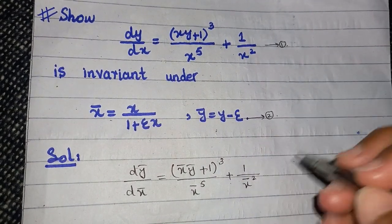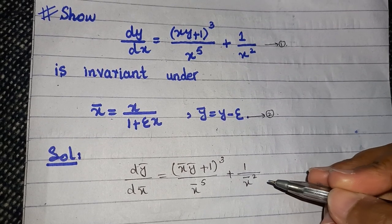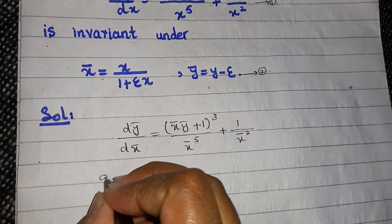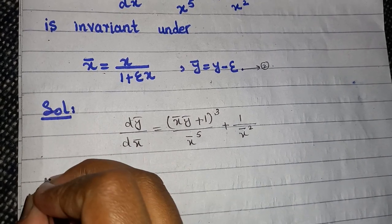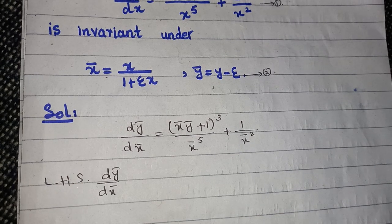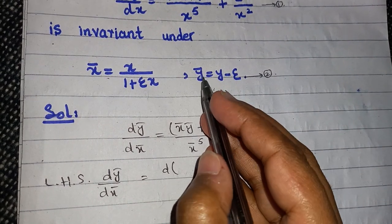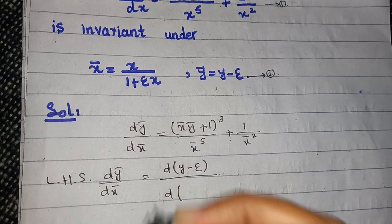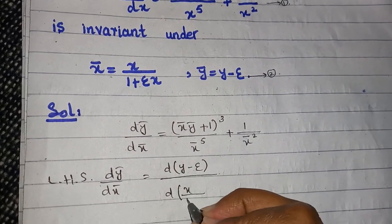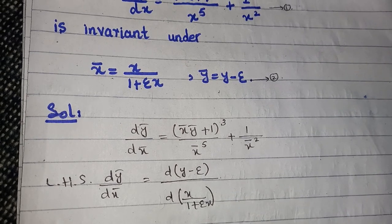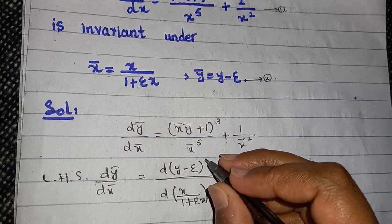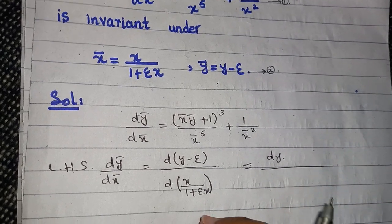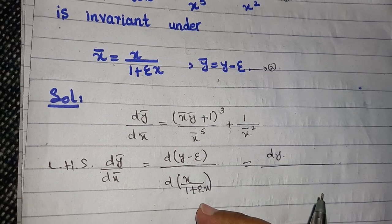If you substitute the values given in equation number two by applying the bar on each of x and y, then taking the left-hand side — dy_bar over dx_bar — and replacing y_bar with its value y minus epsilon divided by the differential of x_bar, where x_bar equals x over (1 plus epsilon*x), the differential of the numerator becomes dy.